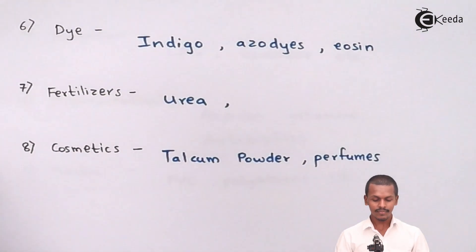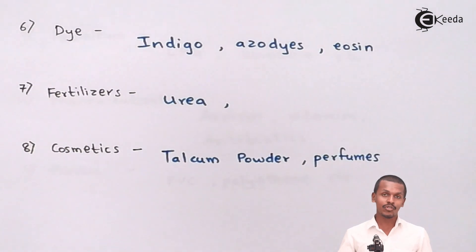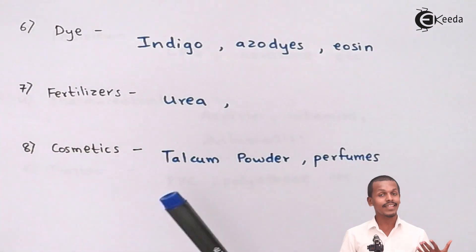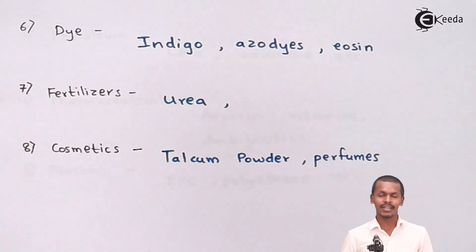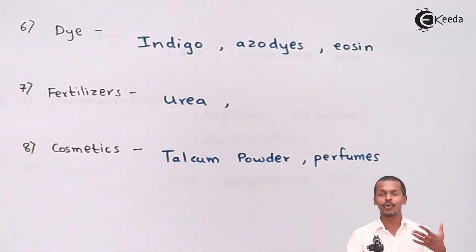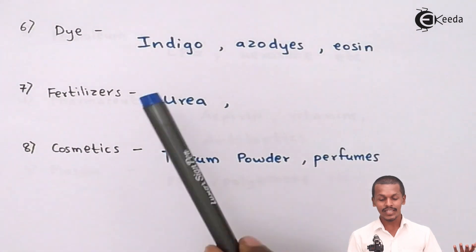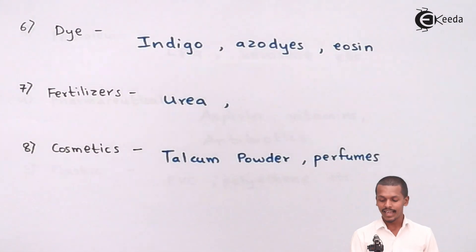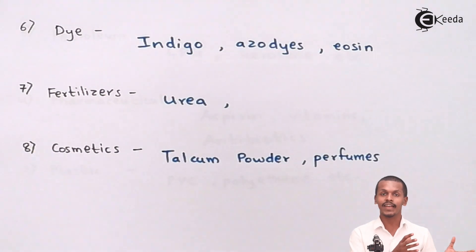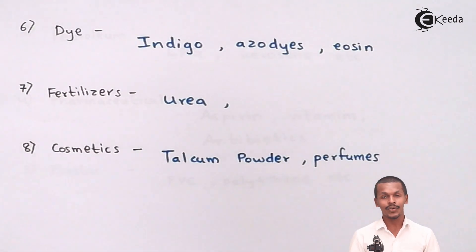Talking about dyes — dyes can be natural or synthetic. Some dyes like indigo are natural dyes, used not only for making good cloth but also in the formation of different coloring materials. We also use azo dyes, which are organic compounds consisting of nitrogen atoms, and eosines. These are natural, semi-synthetic, or synthetic dyes used in our day-to-day life.